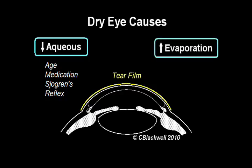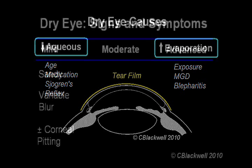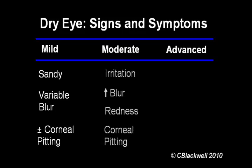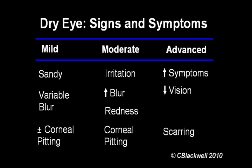The other frequent cause is a problem with the oil-secreting glands, which allows more aqueous evaporation. This is called evaporative dry eye. Either way, dryness typically causes blurred vision, a feeling like there is sand in the eye, and if it is bad enough, damage to the cornea. This is a very common ocular surface problem related to age.